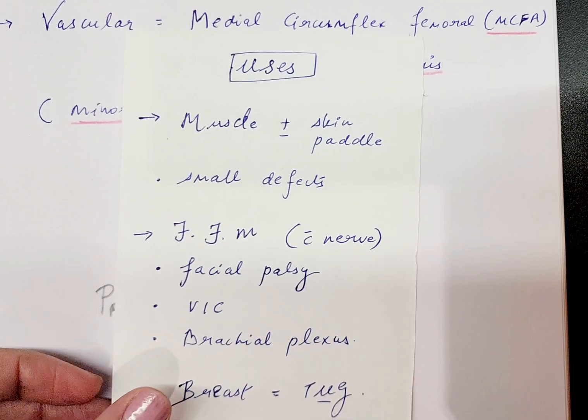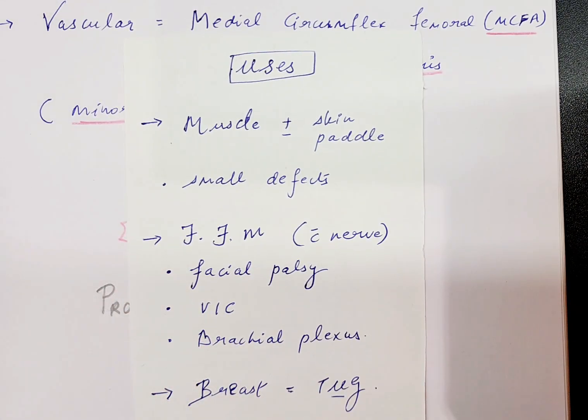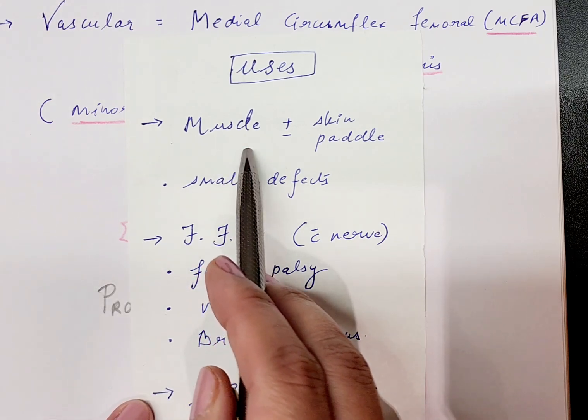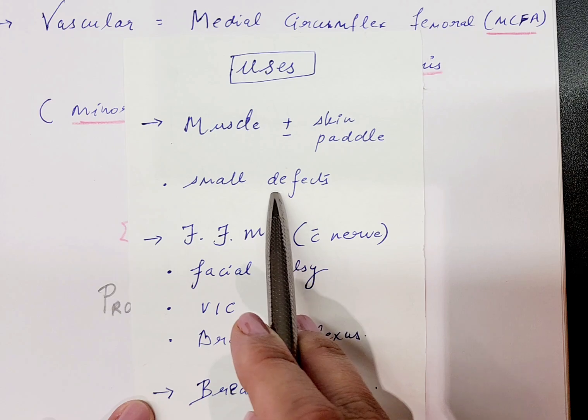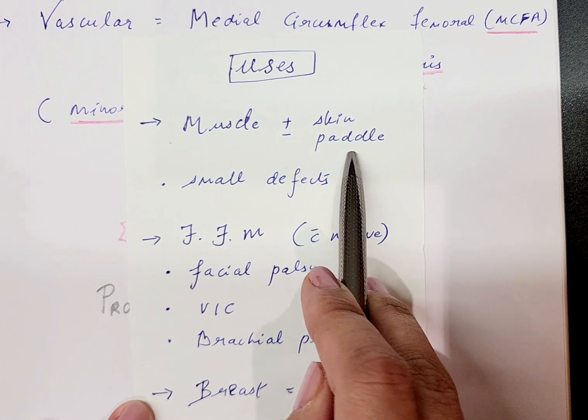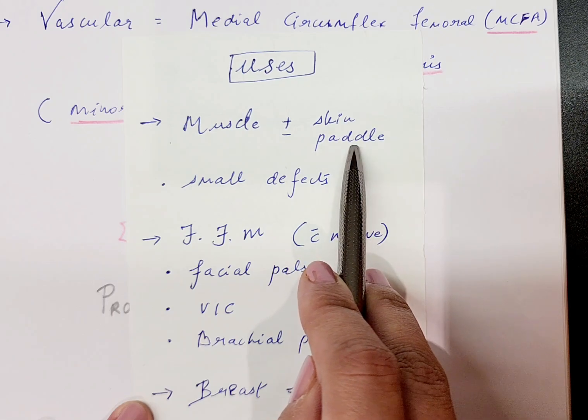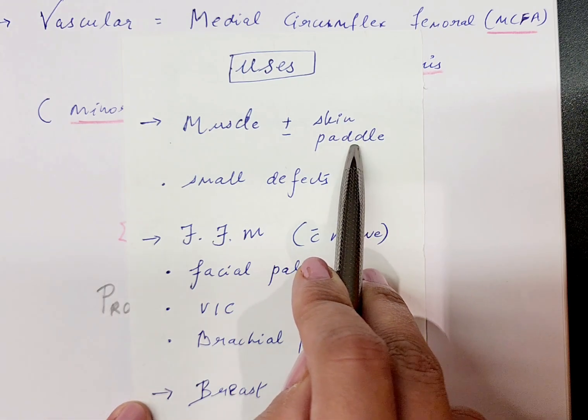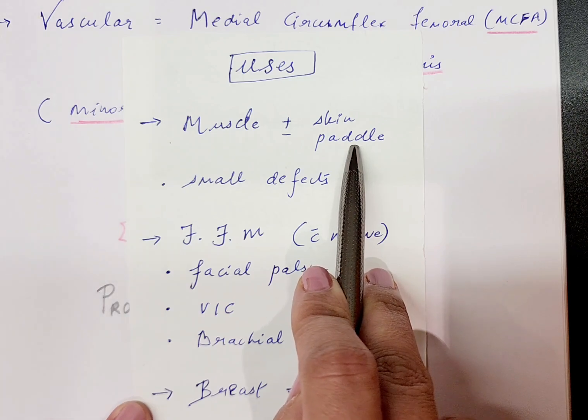Because of the vascularity and the innervation associated with this flap, it can be harvested as muscle only, which is used to fill small defects such as over the dorsum of the foot or over the upper limb. We can harvest the skin paddle along with it. In a lot of cases, the skin paddle is taken only as an outside monitoring device to make sure that the muscle is also getting good vascularity.